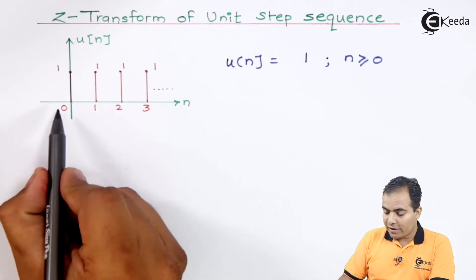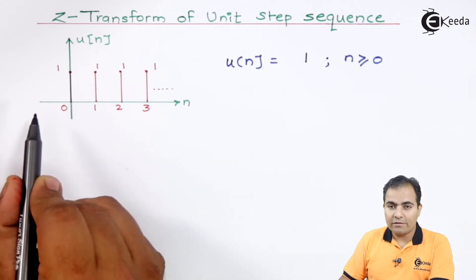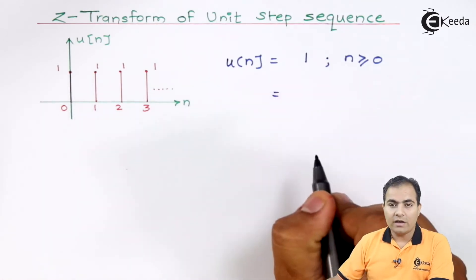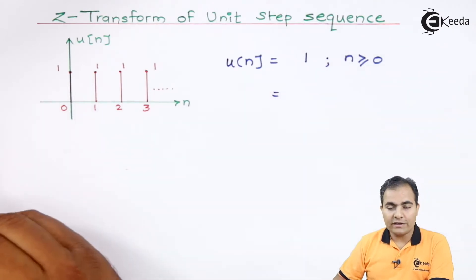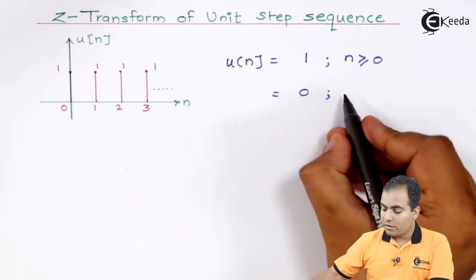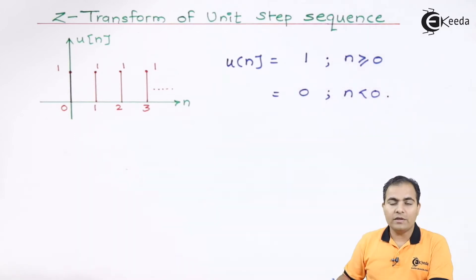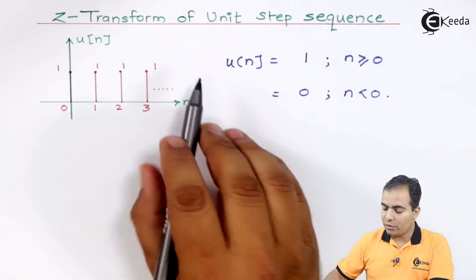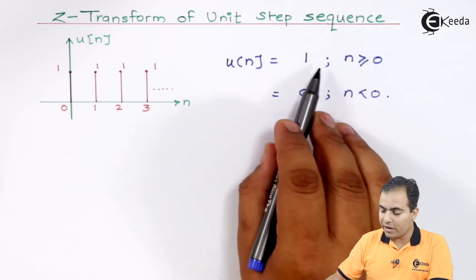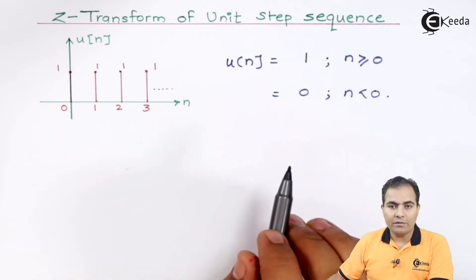But what about the left-hand side? I have not plotted any graph or any sample on the left-hand side, which means the amplitude available on the left-hand side is 0. This will be for n less than 0. So for n ≥ 0 the amplitude is 1, and for n < 0 the amplitude is 0.